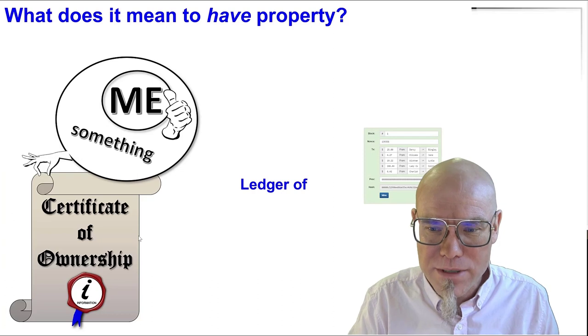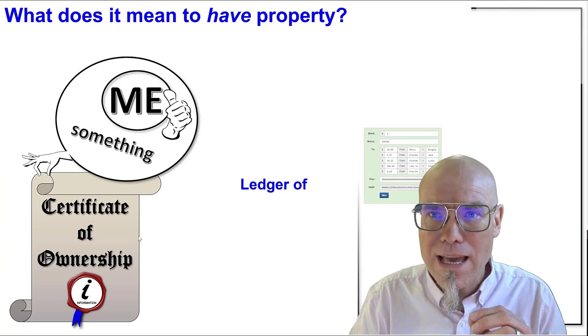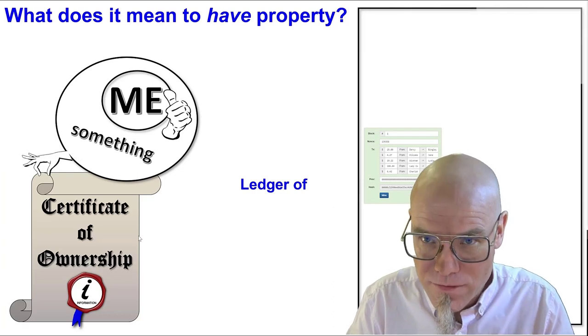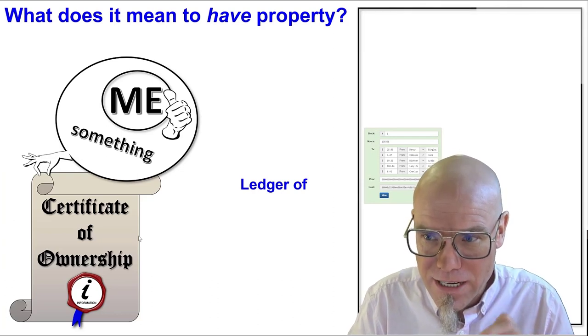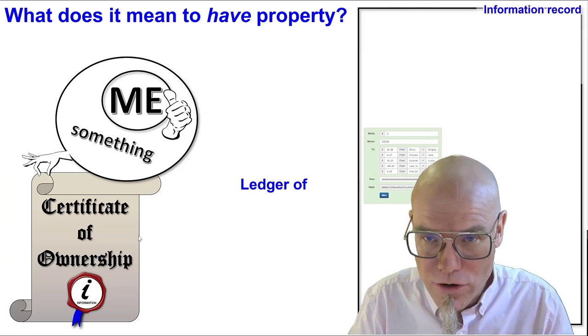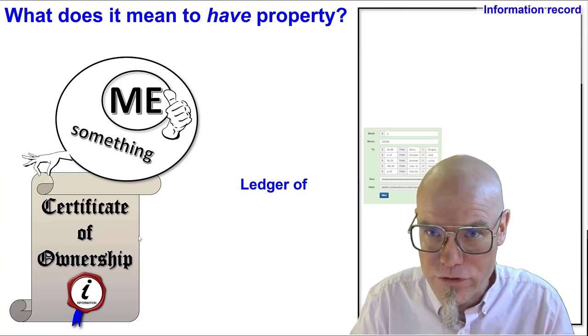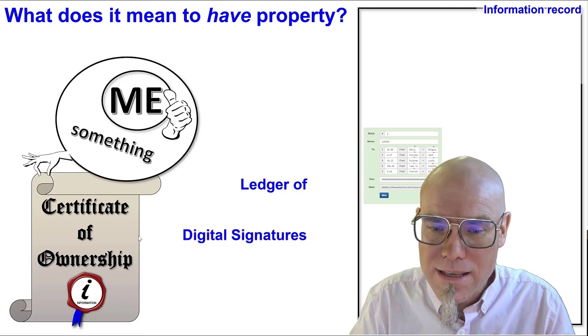What does it mean to have property? We have a ledger — an information record where we have to register ownership.